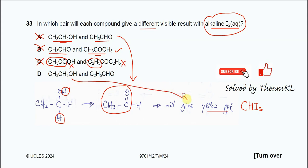So for pair D: one compound will form a yellow precipitate, while the other — ethanoic acid (with the C=O of a carboxylic acid) — will not give a yellow precipitate. So one gives a yellow precipitate and the other does not. That's why the answer is D, because it's asking for different visible results. That's all, thank you.